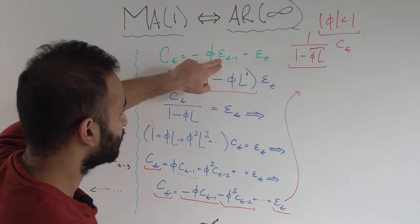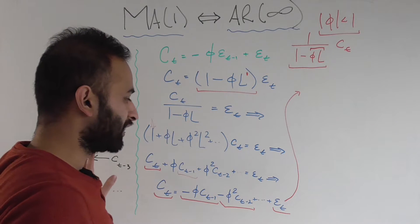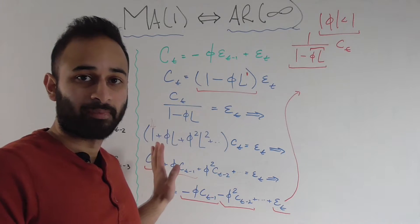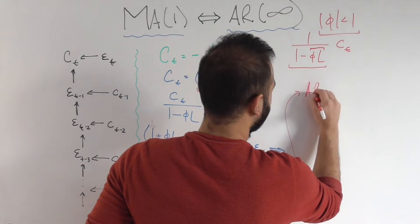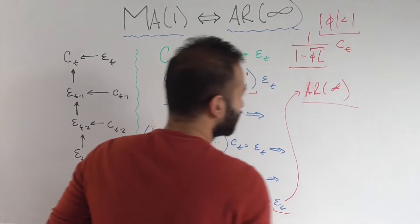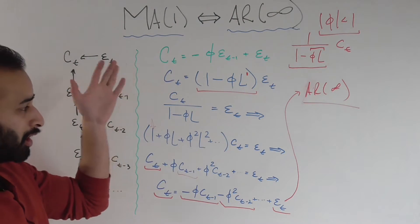So that's why this formulation of the MA1 model is more usable than the MA1 model itself, because this only takes into account values of the time series at previous time periods. Nowhere do you see this epsilon sub T minus one. So we never have to plug in these innovations from the past. So that's why this thing, which is an AR infinity model, is more usable than the MA1 model it came from.